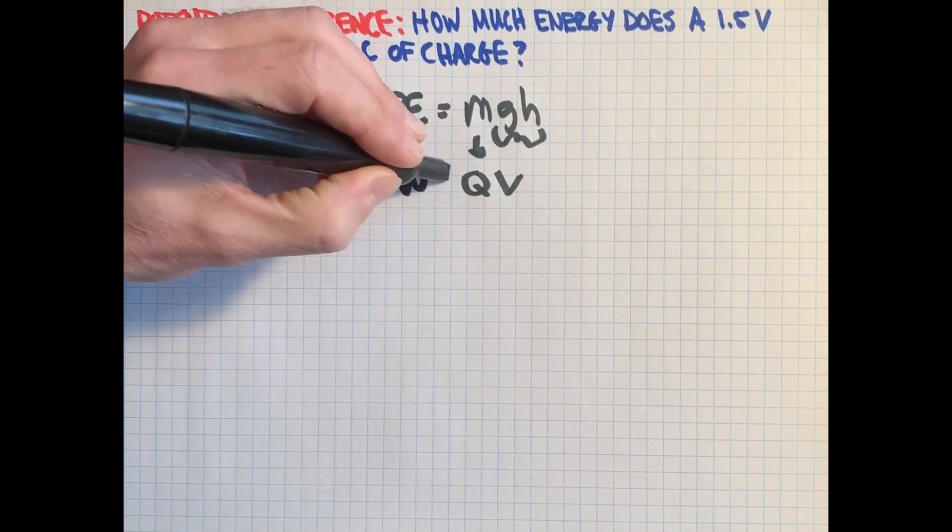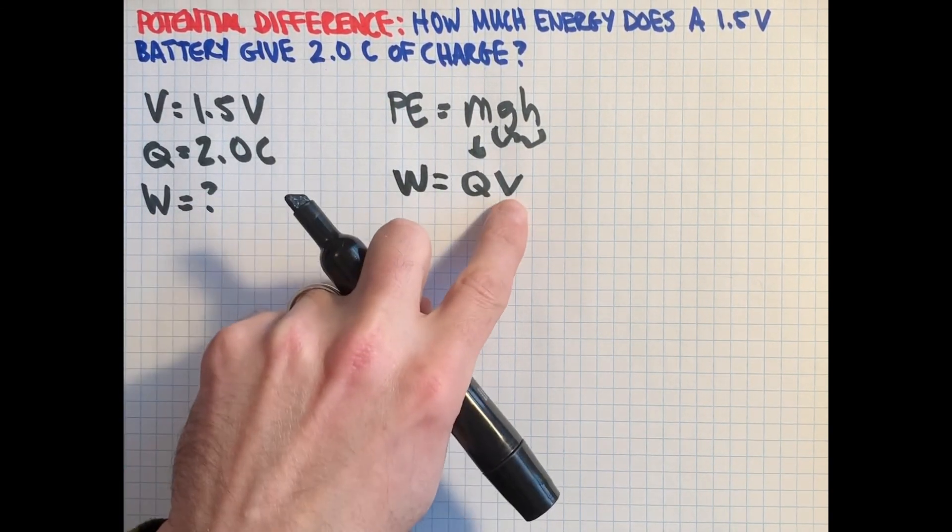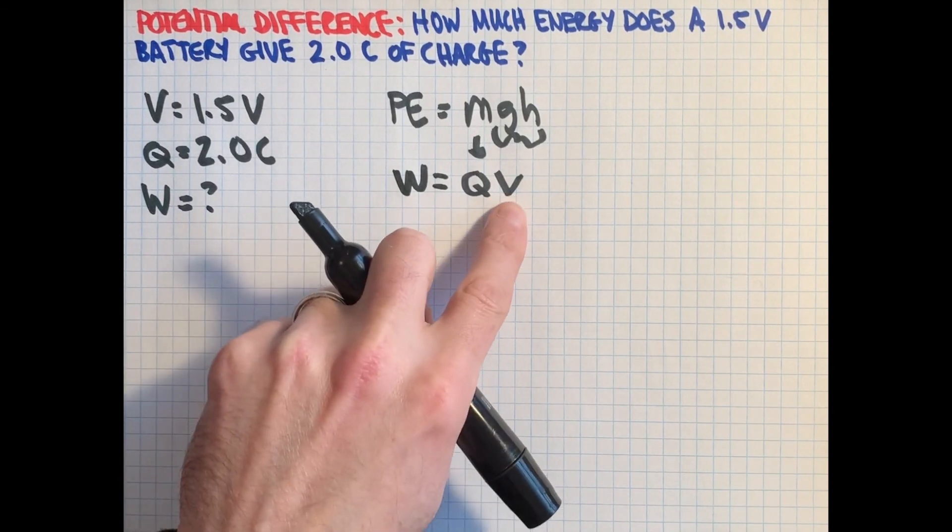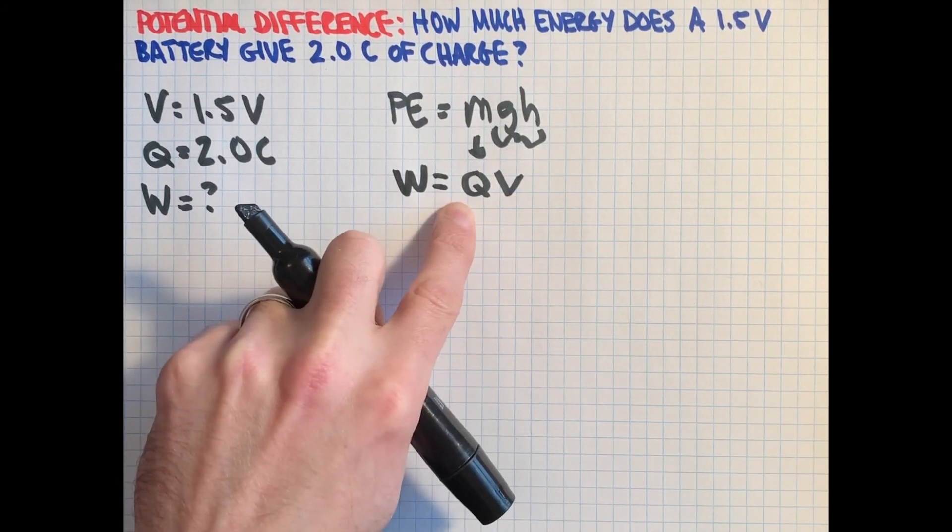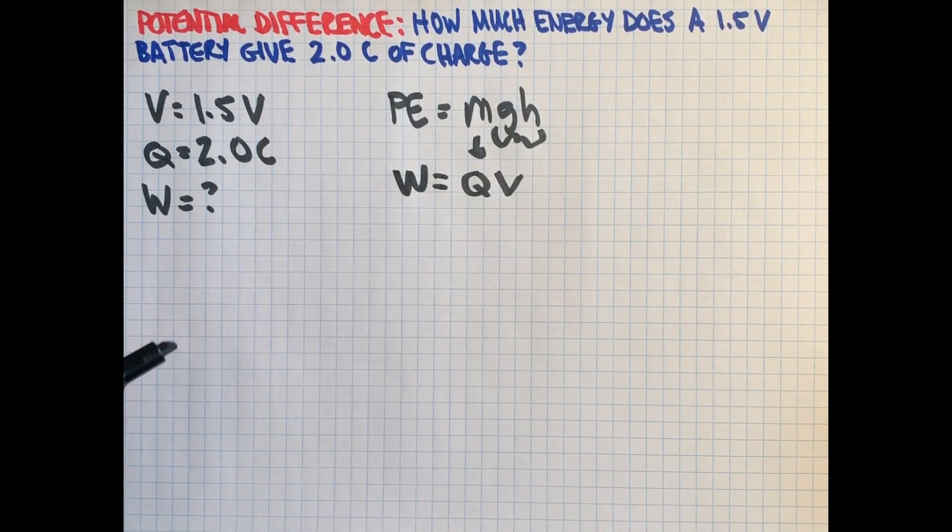And so to get work out of charge, we need to have some kind of voltage, which is some kind of potential difference between point A and point B, and then some charge to move through that the same way we had with gravitational potential energy.